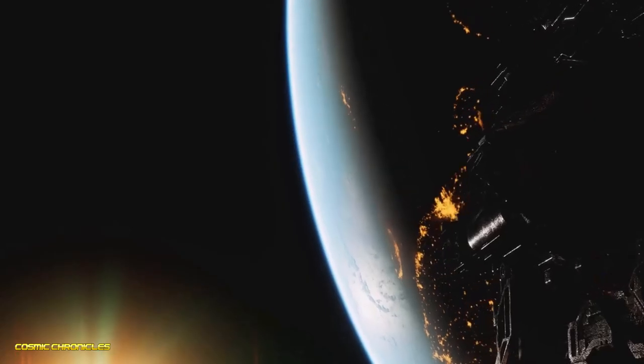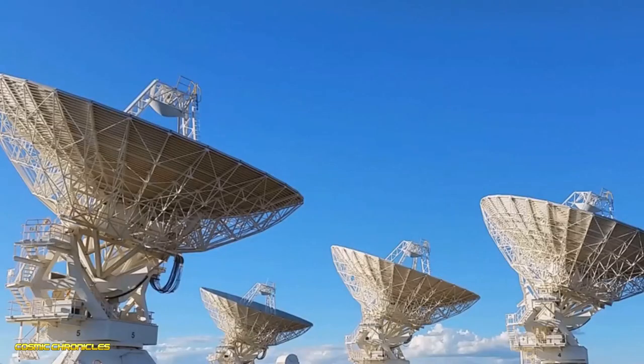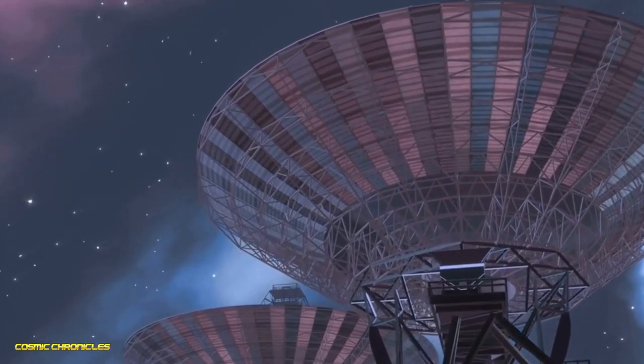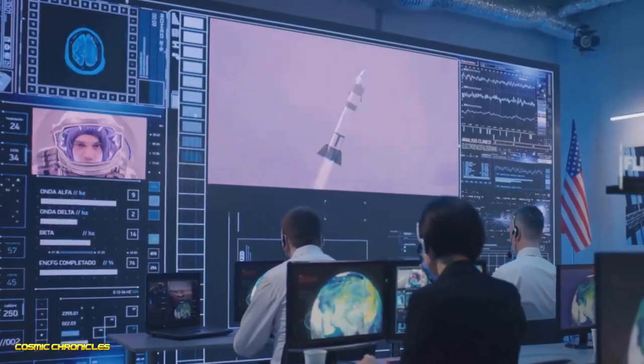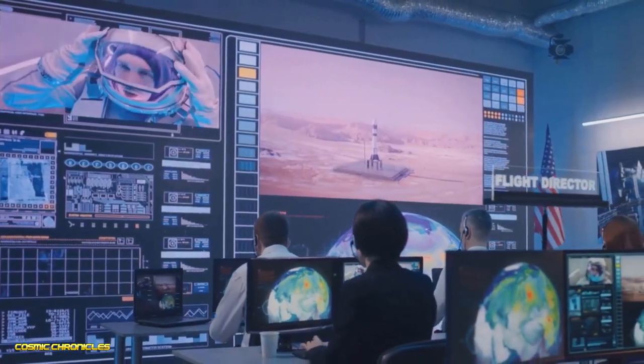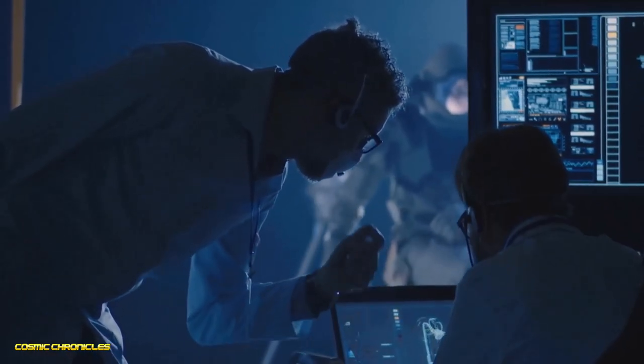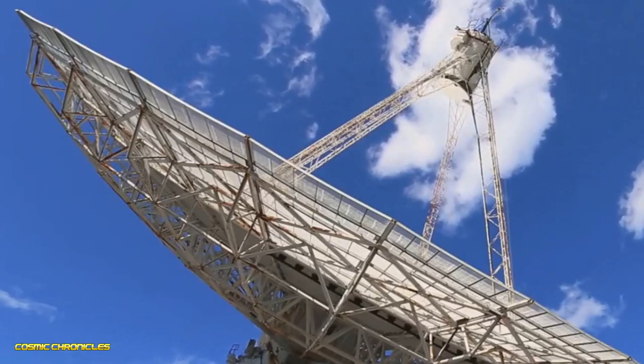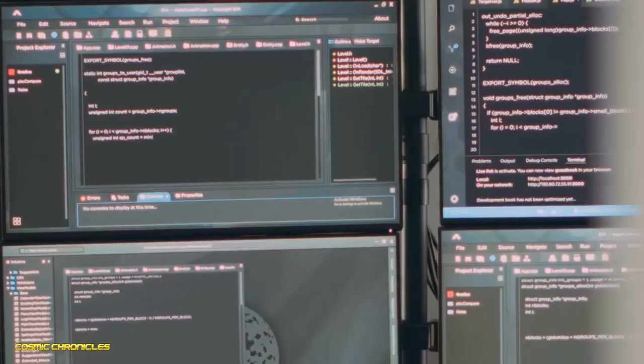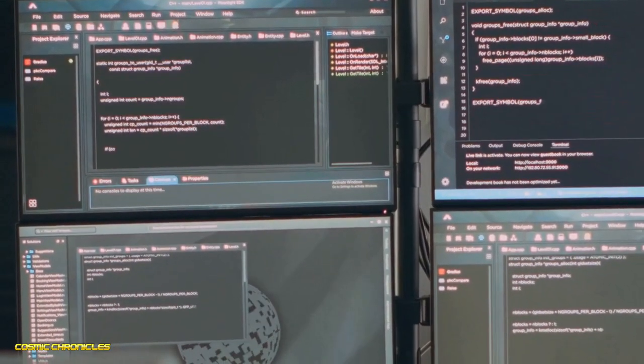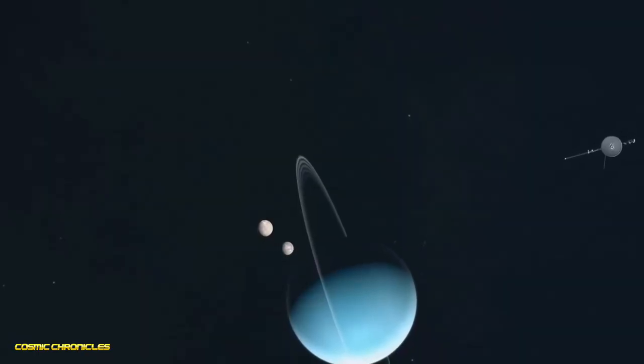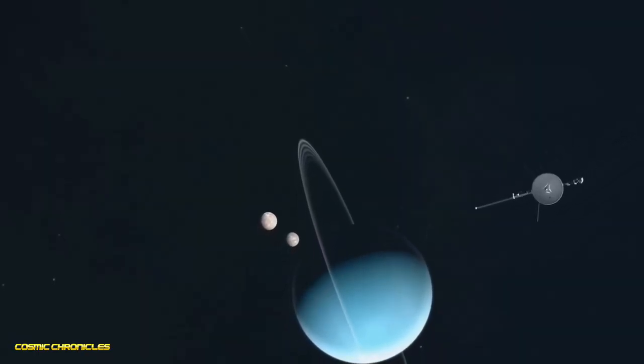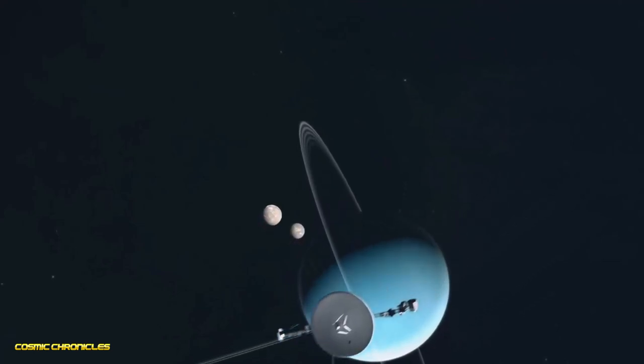Then there was the issue of distance. Communicating with spacecraft billions of miles away was no easy feat. Signals weakened over such vast stretches, and it took hours for messages to travel back and forth. But the brilliant minds behind the mission persevered. They developed new technologies, built giant antennas to capture faint signals, and wrote software to compress data and correct for errors. Their ingenuity paid off. The Voyagers not only survived the journey but thrived, sending back breathtaking images and groundbreaking data.